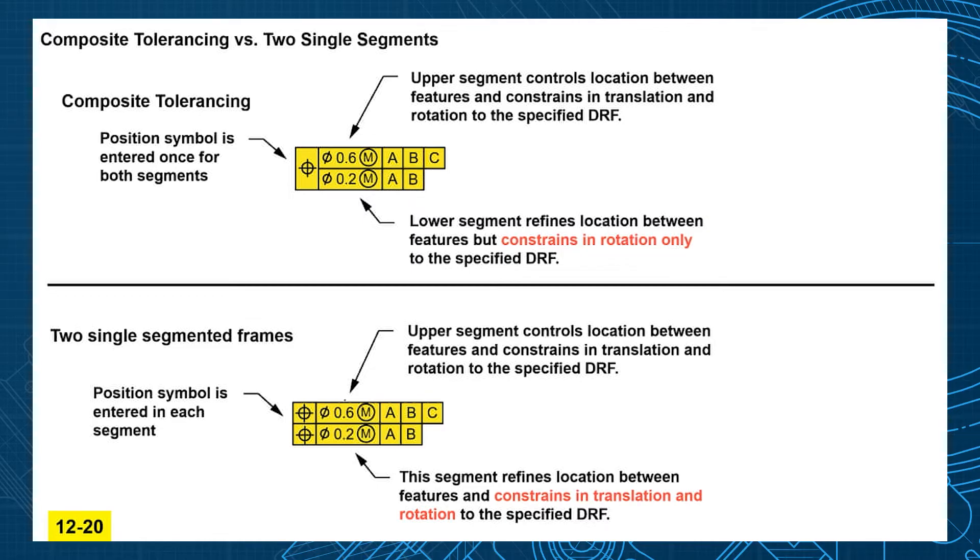Now the lower one here is not composite—this is just two single segmented frames. This reads like a normal one position to the datums, and the lower one is also a tighter position to just these datums.